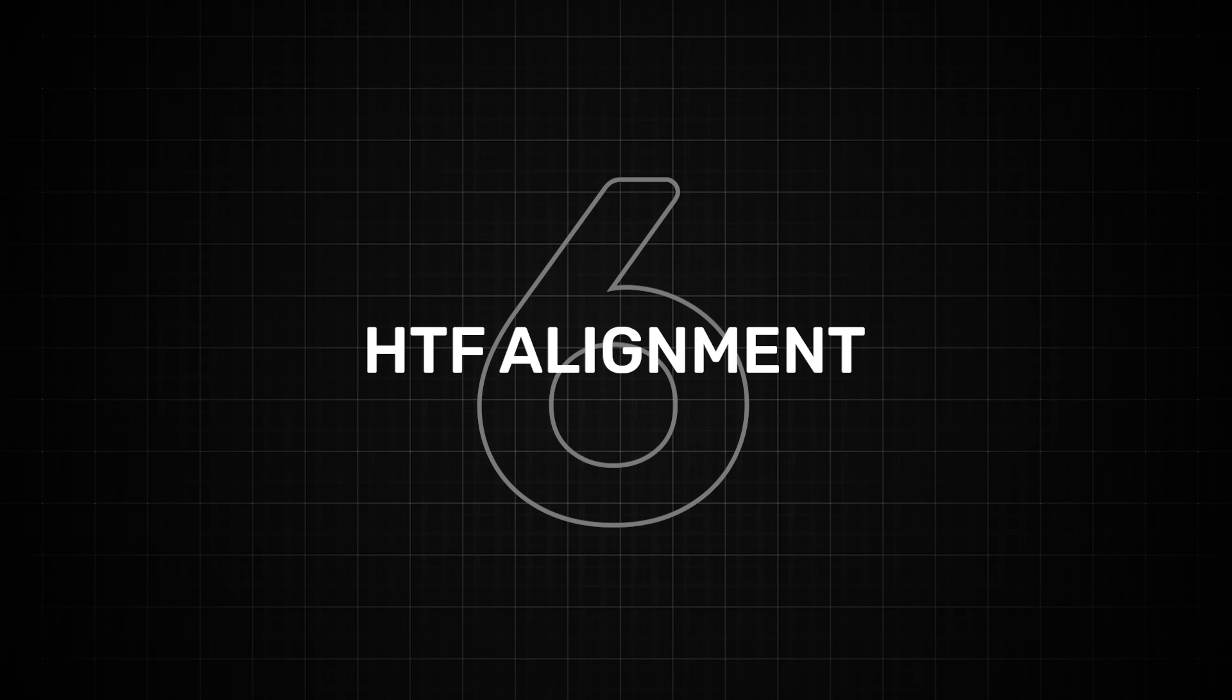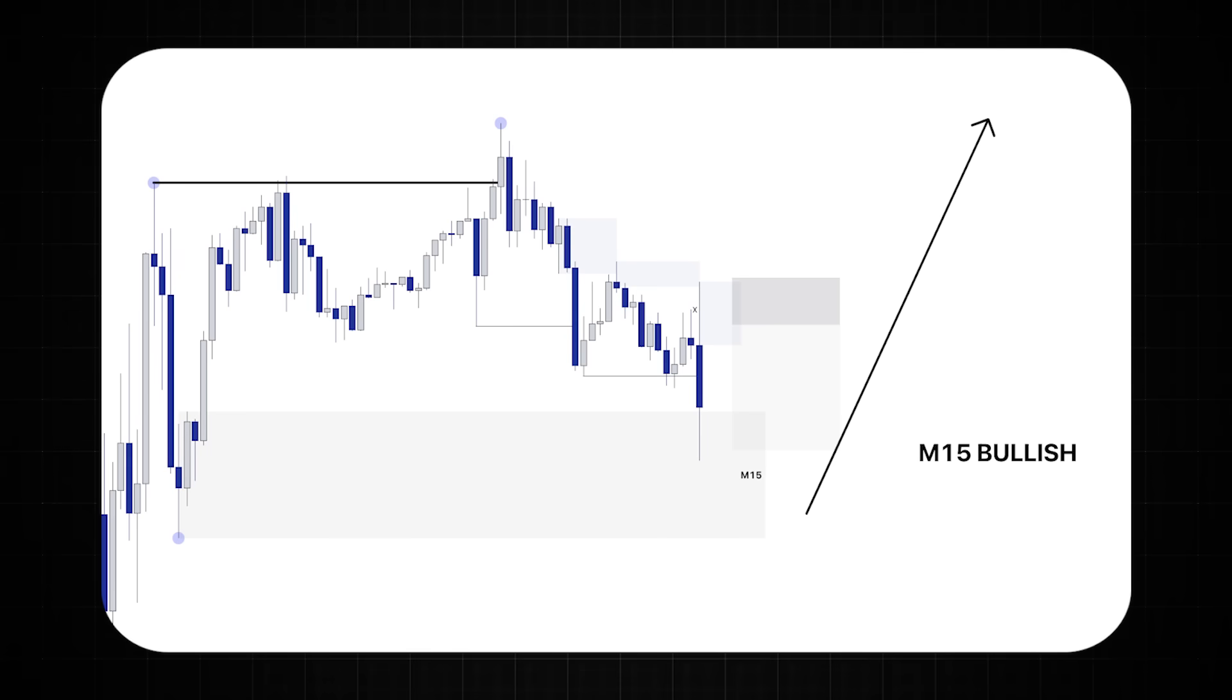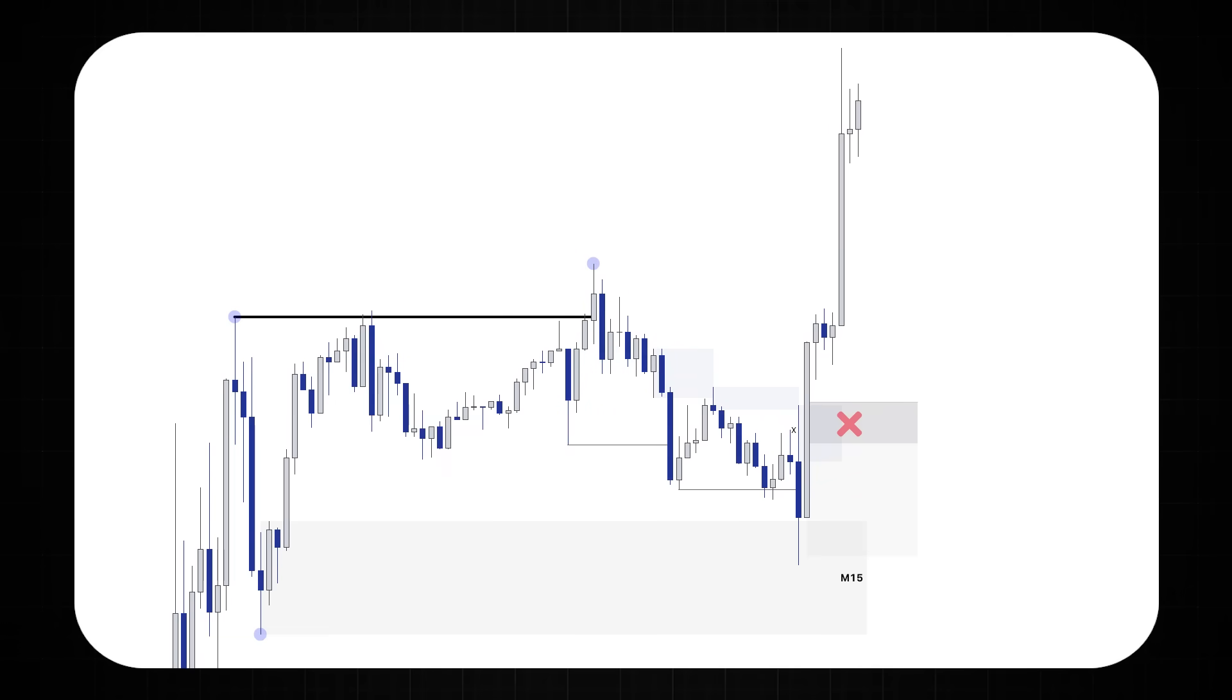Number six do you have alignment with the higher time frames because the more time frames that you have aligned the higher probability of that trade. Here it might look like a high probability sell to follow the bearish trend on the M5 but the M15 is bullish and it's just mitigated the M15 demand at the strong M15 low so now the M5 is likely to also switch bullish. Understanding multi-time frame analysis will help you to avoid a ton of losses as time is power and higher time frame will usually win.